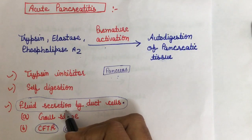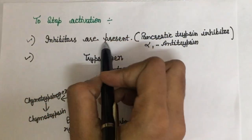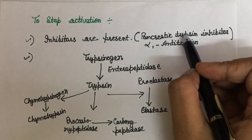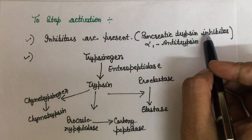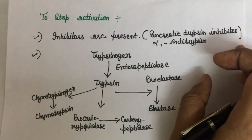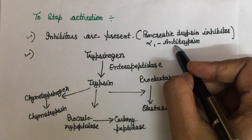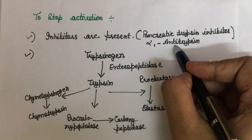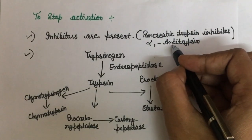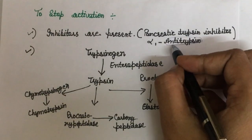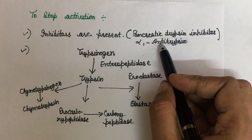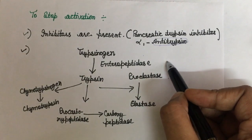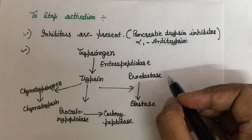A few notable inhibitors: pancreatic trypsin inhibitor blocks trypsin and chymotrypsinogen by binding to them, and when secreted into the GI tract this inhibitor is removed. Alpha-1 antitrypsin blocks elastase very effectively and also blocks other enzymes like carboxypeptidase, chymotrypsin, elastase, thrombin, and plasmin. Alpha-1 antitrypsin is produced in the lungs, and when active forms of zymogens are present in excess and reach the lungs, it binds irreversibly to the target enzyme and makes it inactive, thereby preventing necrosis in the lungs.